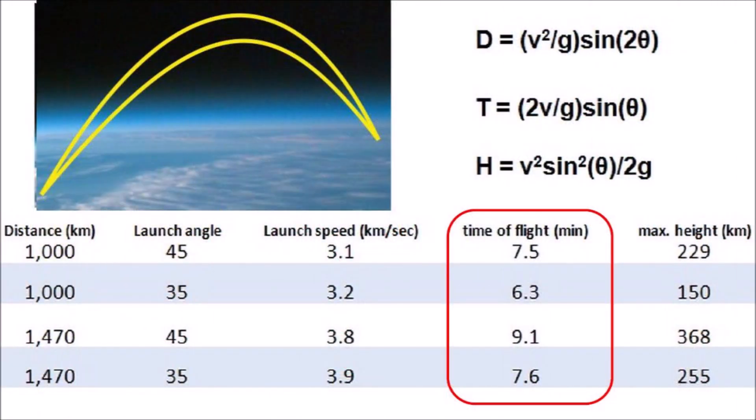Several other videos have discussed the trajectories of the glacier ice chunks from the impact point on the Laurentide Ice Sheet. Depending on the launch angle and the distance, the times of flight varied from 6 to 9 minutes after the extraterrestrial impact. This means that all the overlapping impacts in the Bennetts Bay area were made within a few seconds of each other.